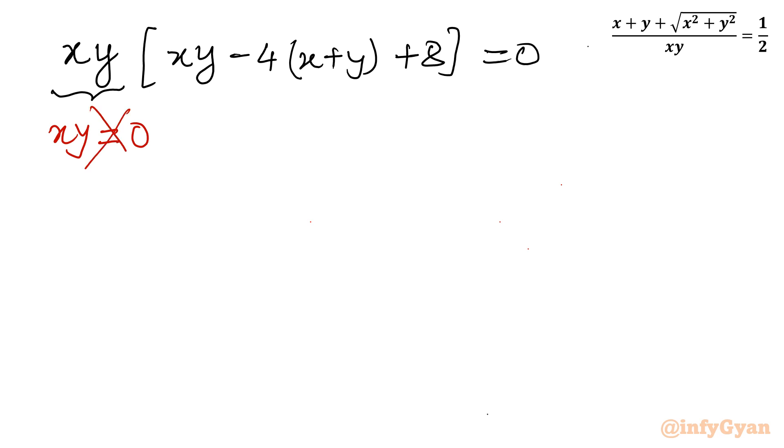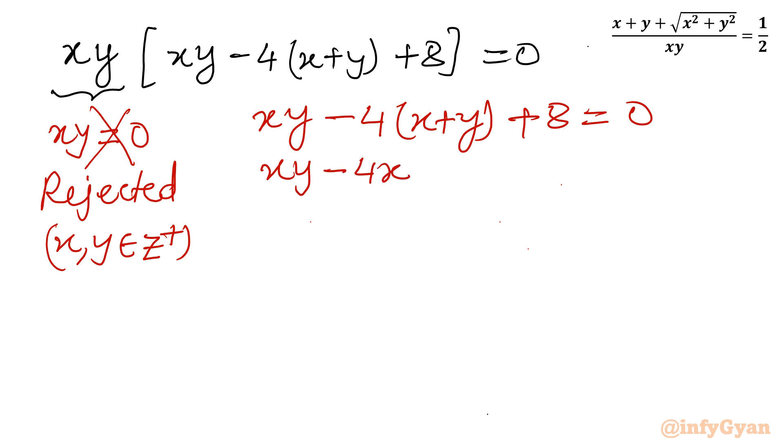No. Because we are searching for positive integers only. So it will generate x equal to 0 or y equal to 0 or both 0. So we will reject this. Rejected as we are looking for xy belongs to positive integers. Now what is left? xy minus 4x plus y plus 8 equal to 0. So I will write xy minus 4x minus 4y. And this 8 I will take to the RHS by writing over there minus 8.